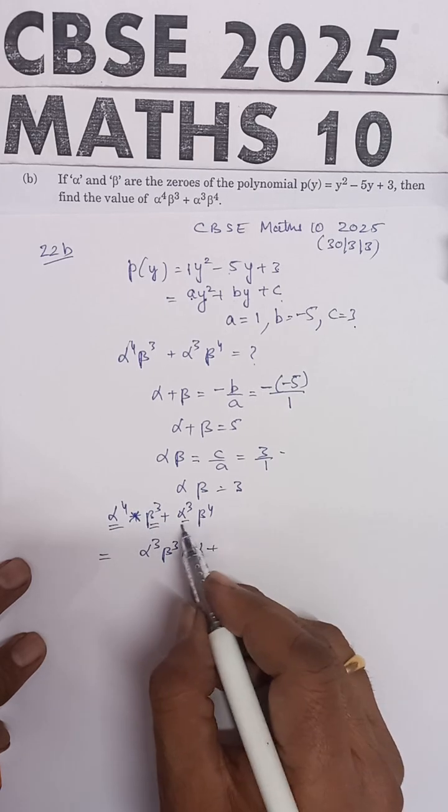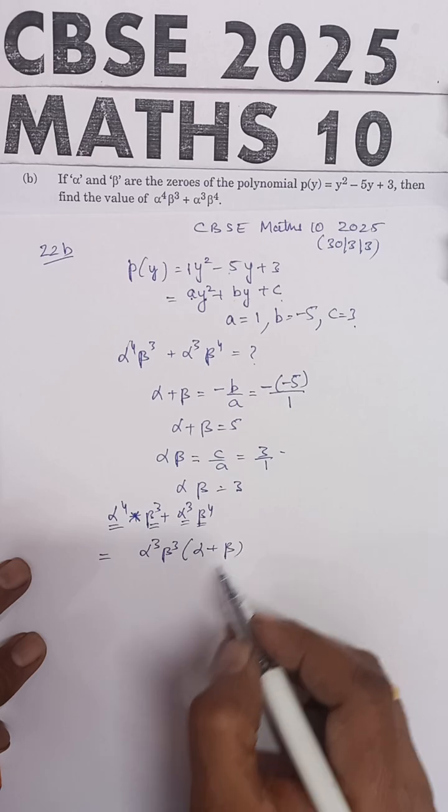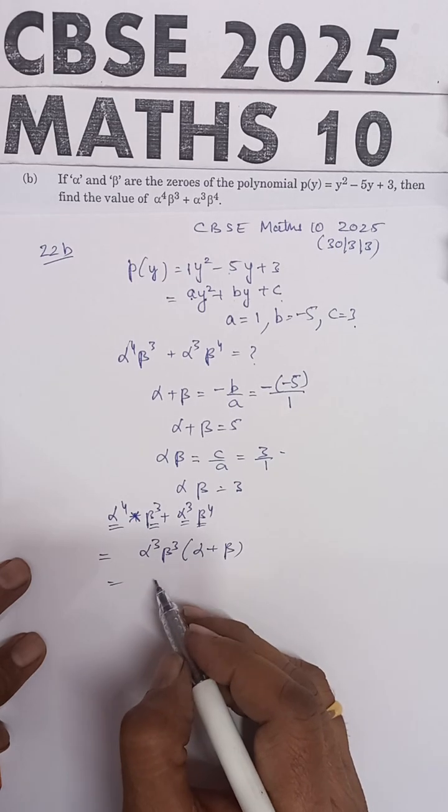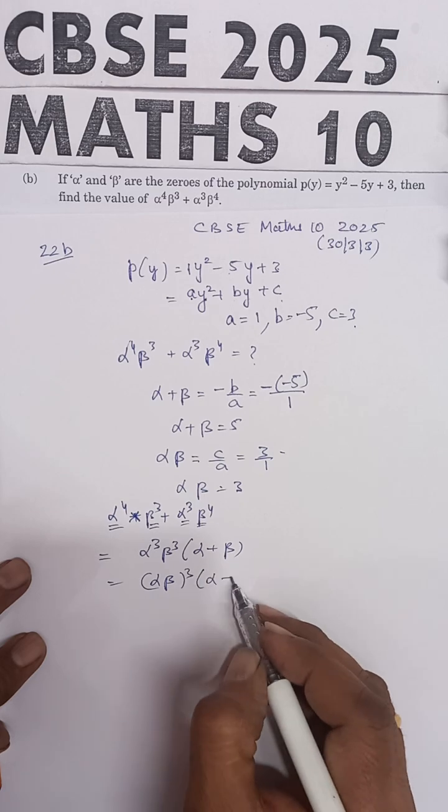This is α³β³(α + β), which equals (αβ)³(α + β).